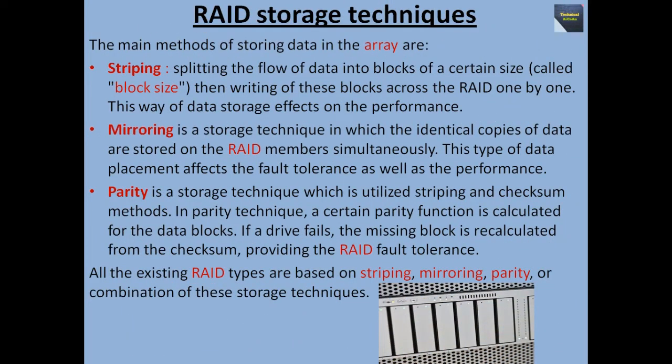Now we talk about RAID storage techniques. The main methods of storing data in the array are: first, striping — splitting the flow of data into blocks of a certain size called block size, then writing these blocks across the RAID one by one. This way of data storage affects performance.